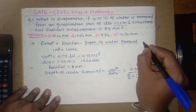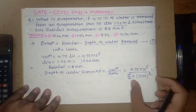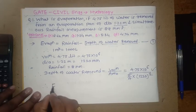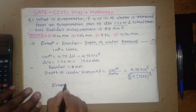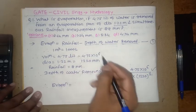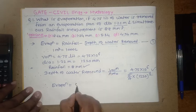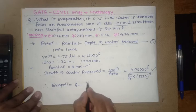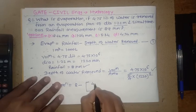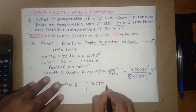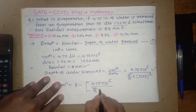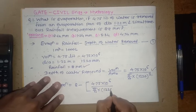This is depth of water removed, this total term. Now use that term in this formula. Let's give equation number one. Put this value in equation number one. Therefore your evaporation is equal to rainfall, it is 8 mm, so rainfall 8 minus depth of water, that is this term, so in bracket 4.75 × 10^-6 upon π/4 × 1220 squared.